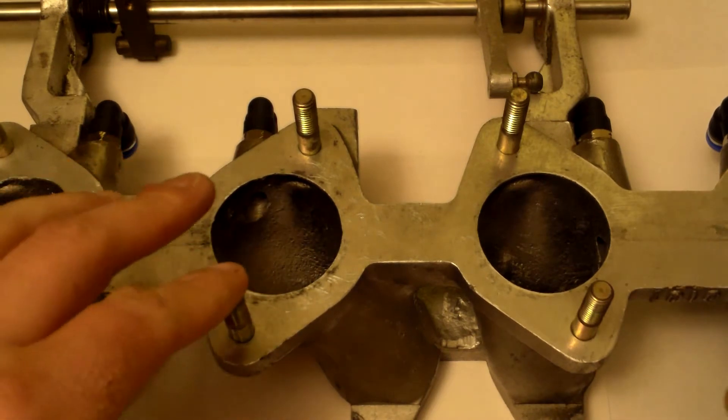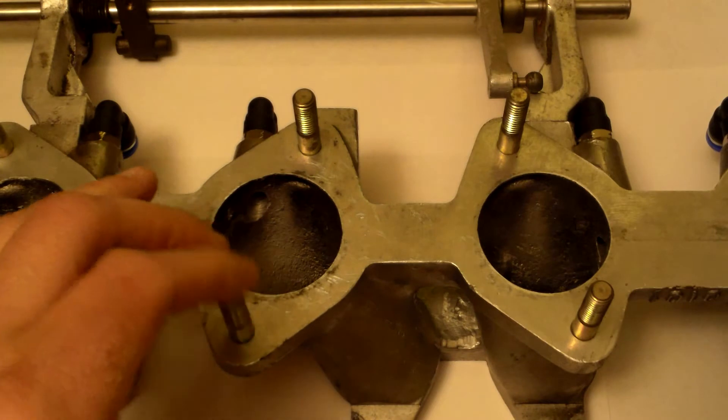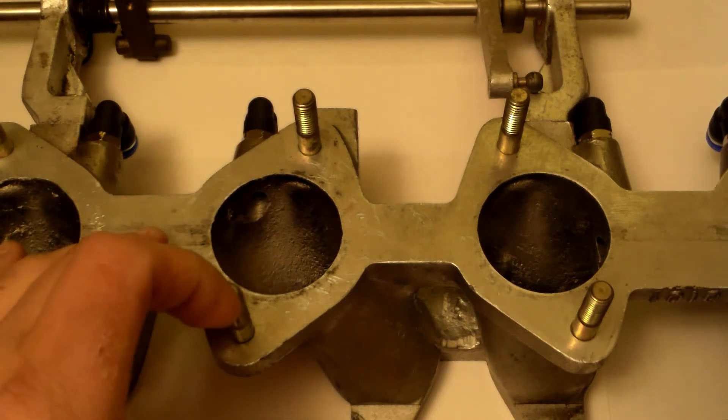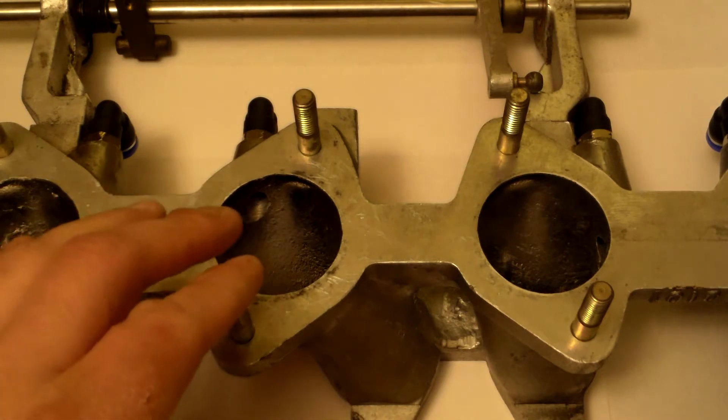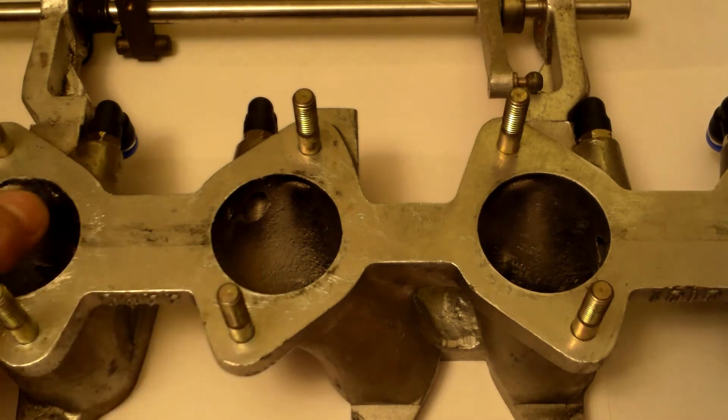Why? Because vacuum is very important. Be it for your distributor, your vacuum advance. Depending on how much vacuum that pulls in your vacuum advance, it advances the distributor. Same thing with a manifold absolute pressure sensor. The amount of vacuum that's pulled advances that. So we need vacuum.